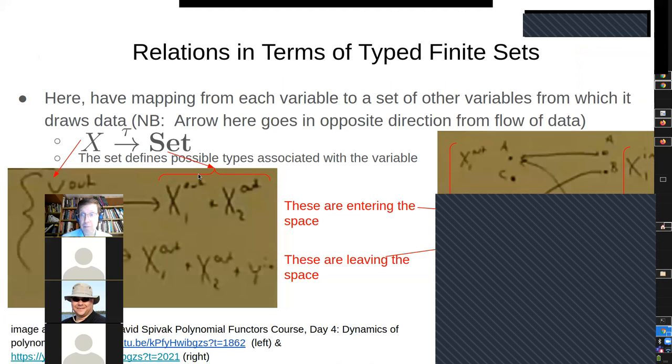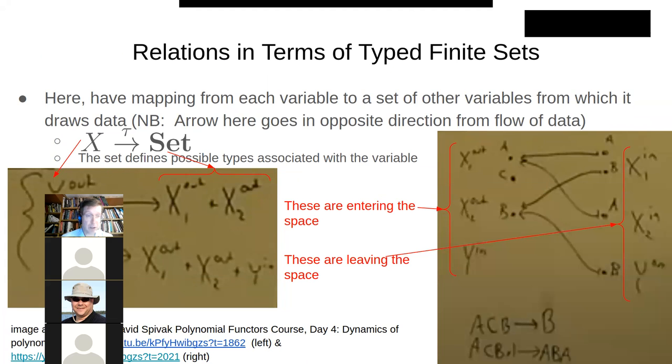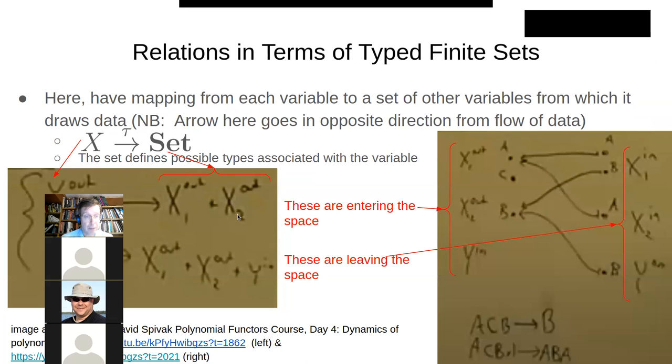but it's this notion of typed finite sets. And here we have, we have a mapping from basically each of these boxes